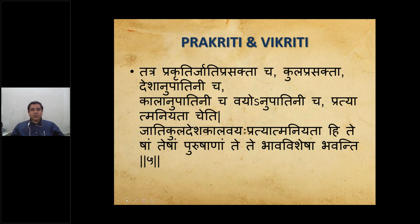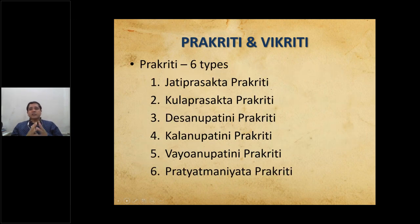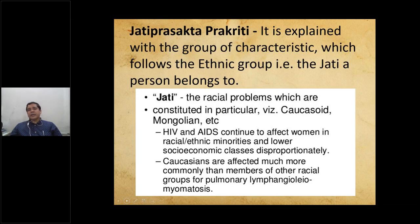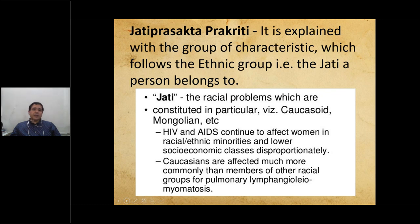The six types of Prakriti are: Jati Prasakta, Kula Prasakta, Desha Anupatini, Kala Anupatini, Vayoni Patini, and Pratyatma Niyata Prakriti. Jati Prasakta refers to characteristics that follow the ethnic group a person belongs to — racial predispositions. For example, HIV and other conditions affect ethnic minorities and lower socioeconomic classes disproportionately, which are important references for Jati Prasakta Prakriti.